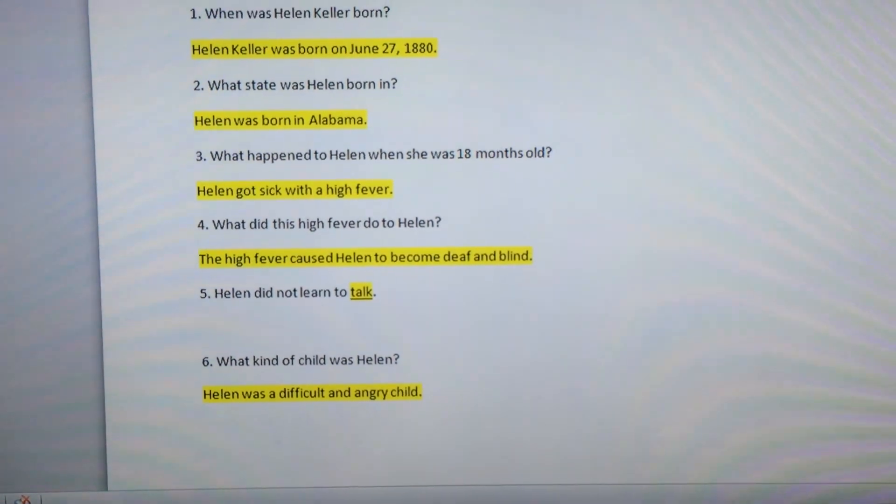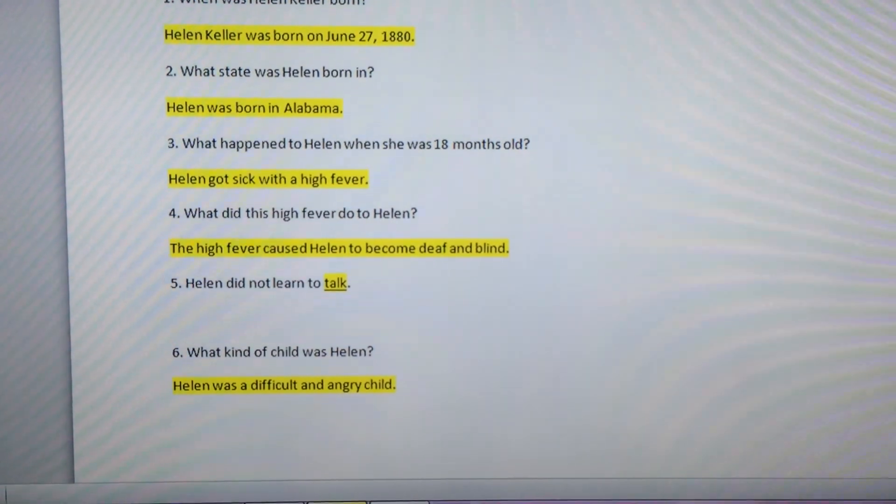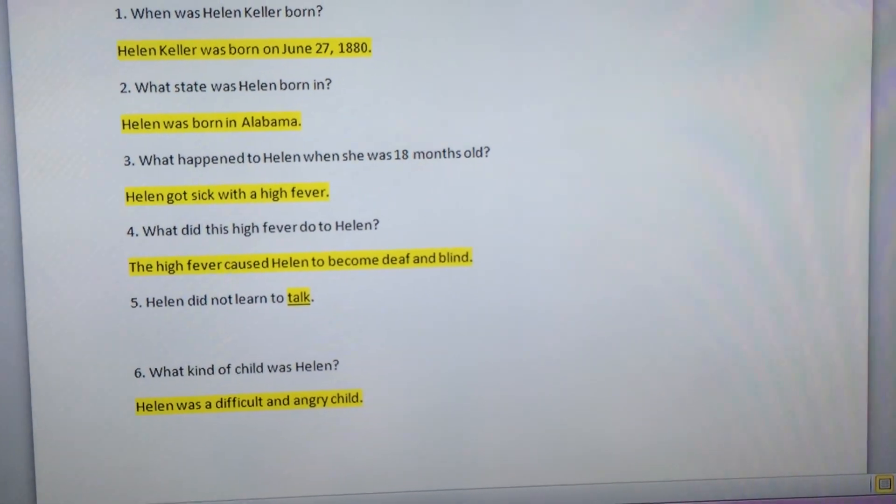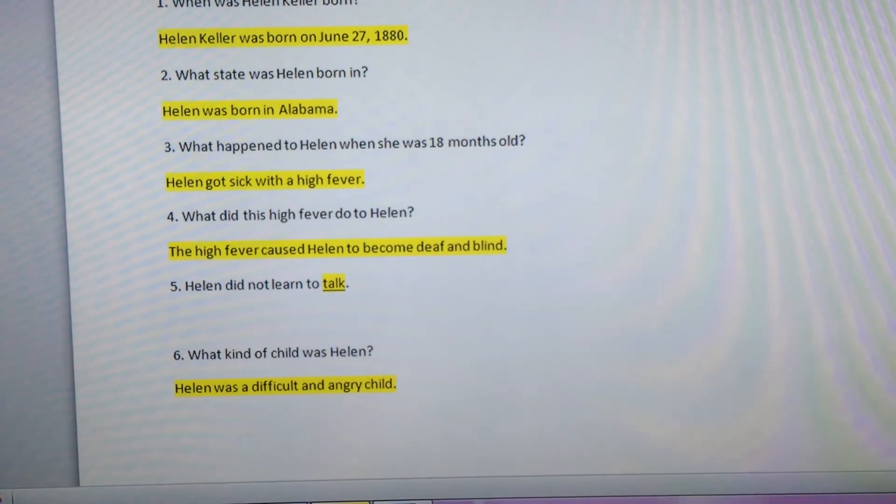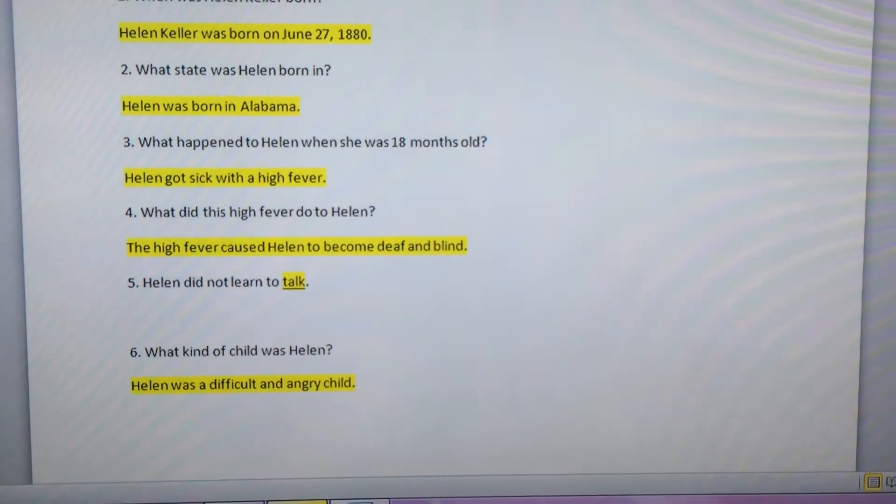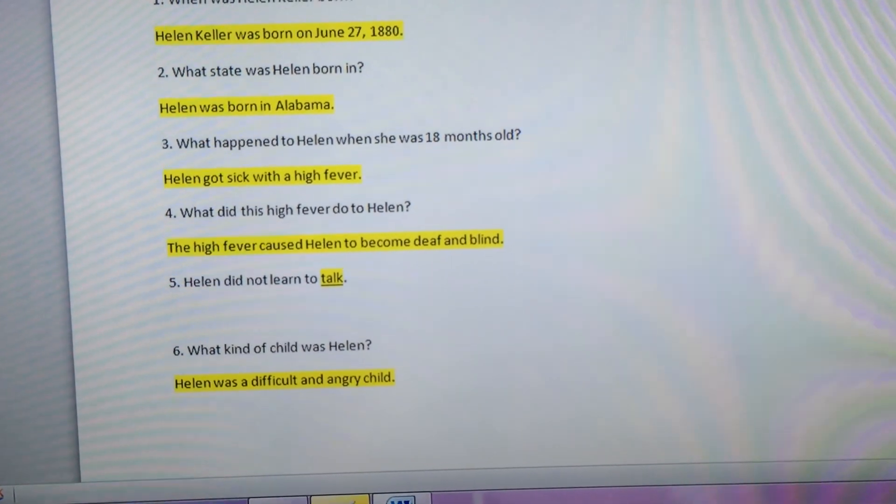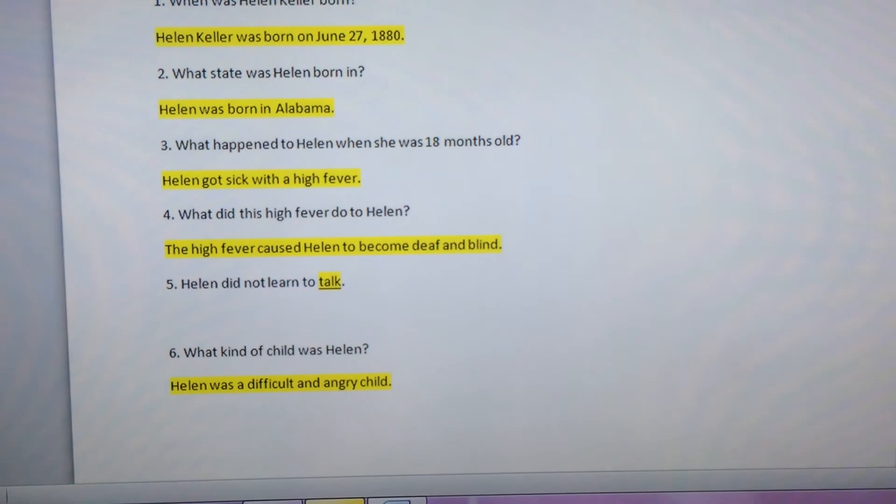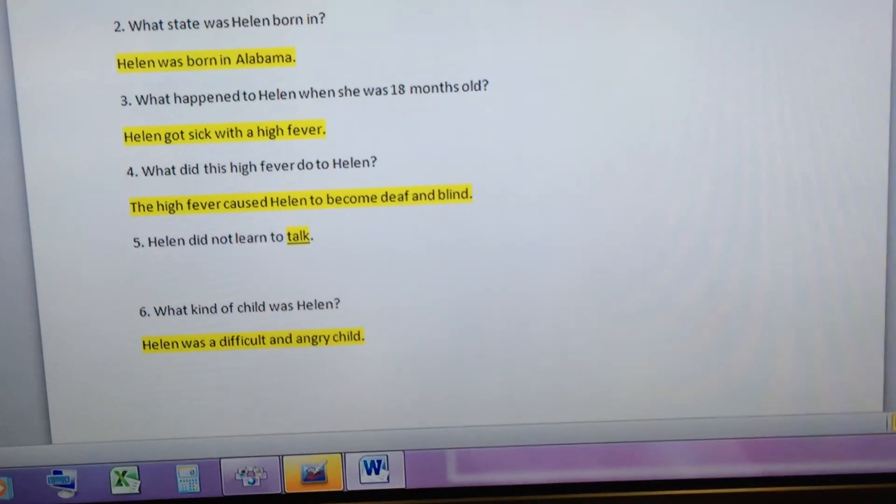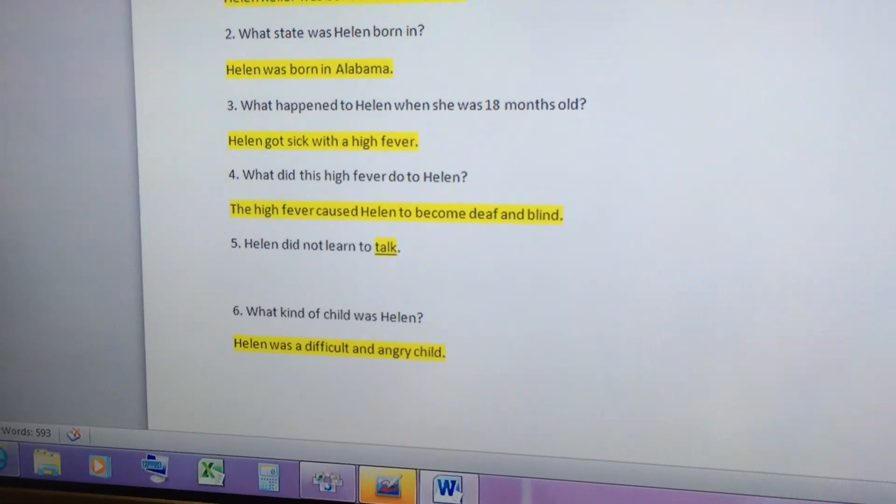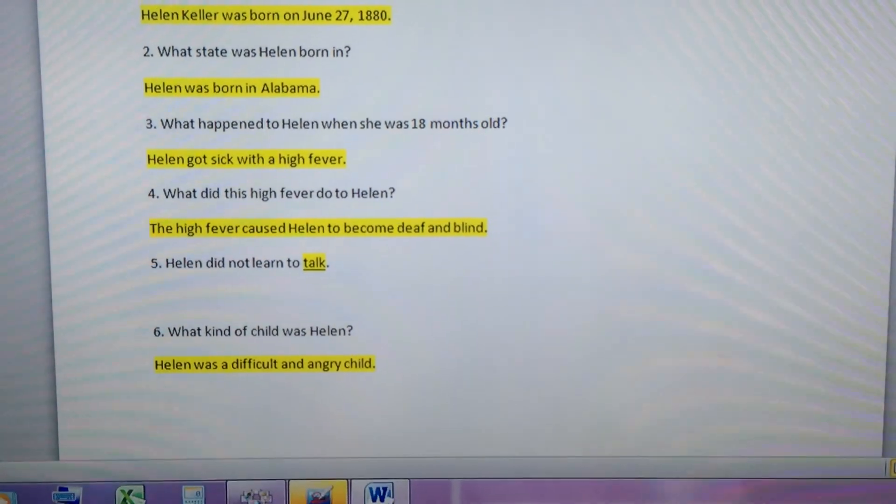Now, let's take a look at number five. Number five is a fill in the blank. You just need to find the missing word. Helen did not learn to talk. Number six. What kind of child was Helen? Helen was a difficult and angry child. Let's move on.